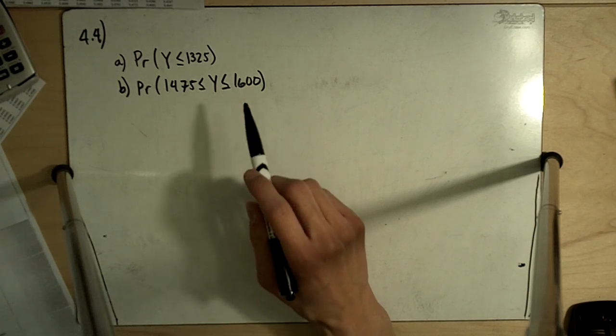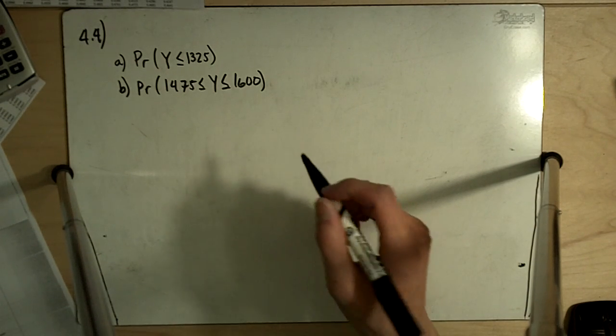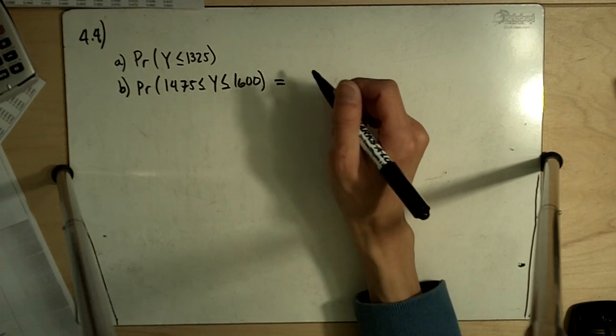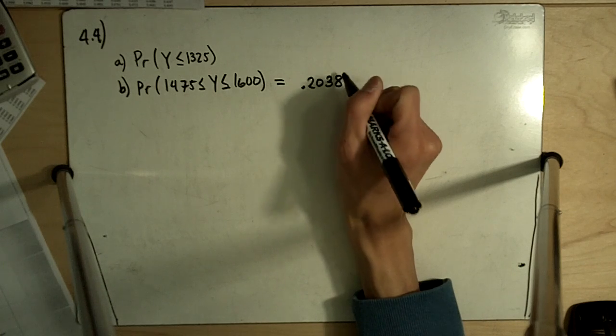Part B asks for the probability that 1475 is less than or equal to Y, less than or equal to 1600. Part B is actually exactly the same as part E in 4.3, and so that answer is .2038.